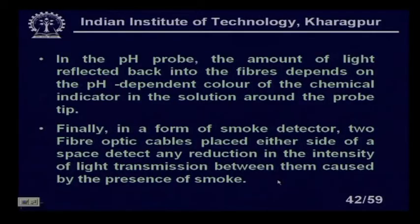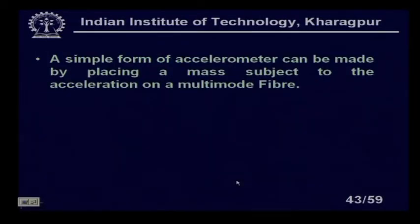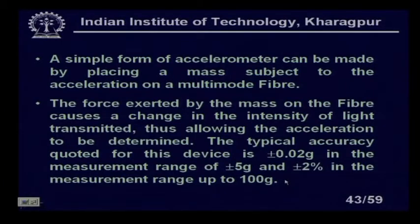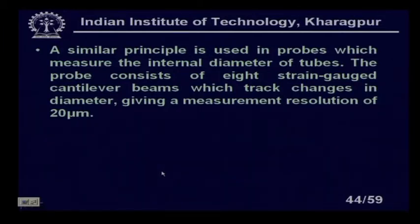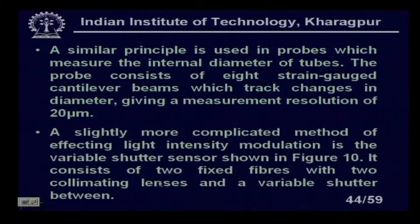A simple form of accelerometer can be made by placing a mass subject to acceleration on a multimode fiber. The force exerted by the mass causes a change in the intensity of transmitted light, allowing acceleration to be determined. Typical accuracy quoted is plus or minus 0.02 g in a measurement range of plus or minus 5 g, and plus or minus 2 percent in measurement ranges up to 100 g. A similar principle is used in probes measuring the internal diameter of tubes, with a measurement resolution of 20 micrometers.